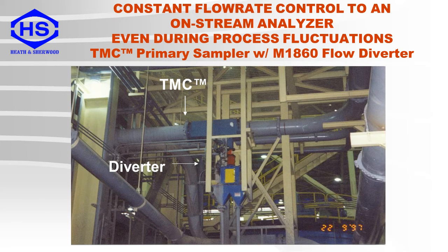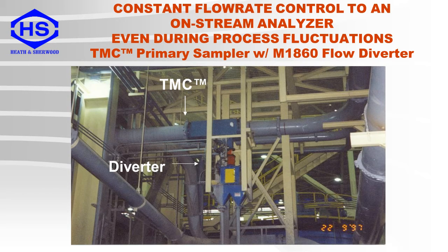This is an example of a TMC sampler with a diverter. The diverter has two discharge pipes — one is for the reject and the other supplies a sample to an on-stream analyzer. The slurry level in the analyzer outlet section of the diverter can be controlled so that a constant flow of slurry can be maintained to the analyzer.